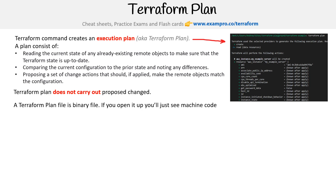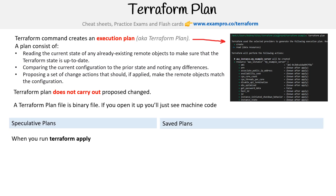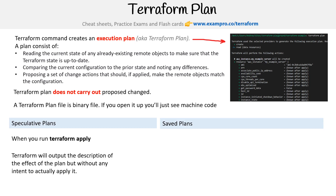When you run terraform plan, you have speculative plans and save plans. Speculative plans happen when you run terraform plan — terraform will output the description of the effect of the plan, but without any intent to actually apply it.